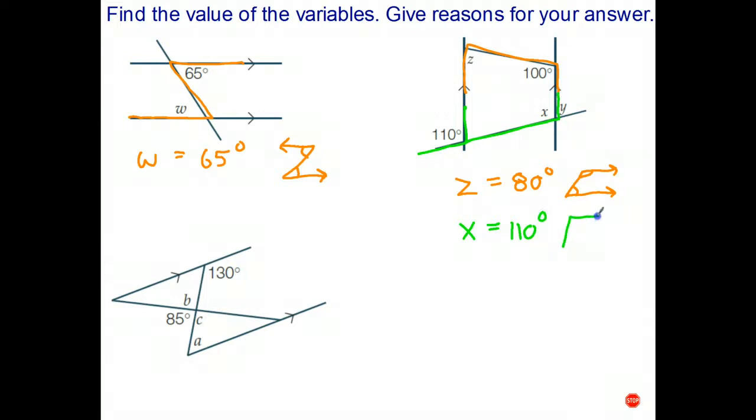And that's because corresponding angles are equal if the lines are parallel, also known as the F rule. And then once you know that x is equal to 110, we could say well x plus y add to 180 because they make a straight angle. And therefore y is 70 degrees.